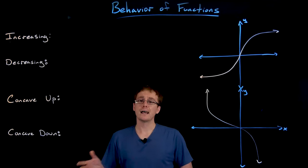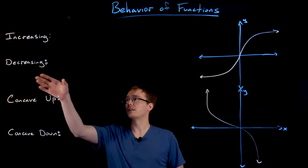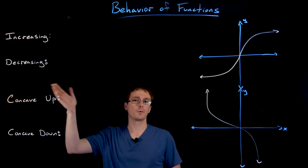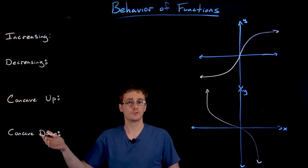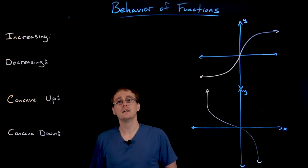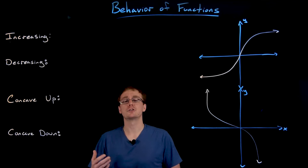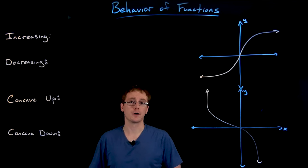Notice how both of these functions have the exact same domain and range of all real numbers, so having other descriptors like where a function is increasing, decreasing, concave up, and concave down can really help us distinguish and set these two functions apart. So we have our informal definition — we go up or down as we move from left to right — but we also want a more formal and algebraic statement.